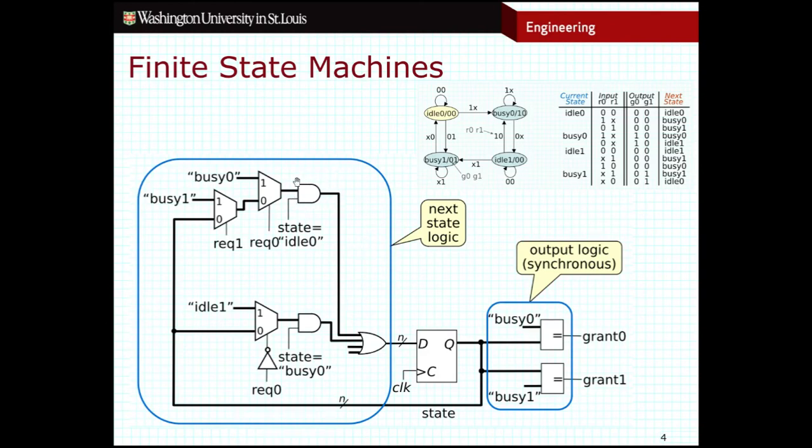This AND gate here is used to detect whether we what state we are currently in. So you see this input here is labeled state equals idle zero. I just need to detect whether our state bits are both zero and if they are then this branch will be active. If I'm not in idle zero, remember states are represented by bits in this particular case, we have two bits, if I'm not in state idle zero let's say I'm in busy zero instead then this AND gate will be off. And I have another AND gate down here for busy zero.